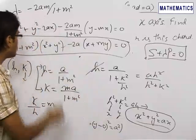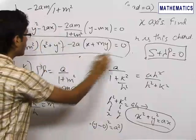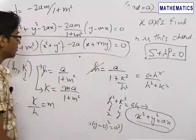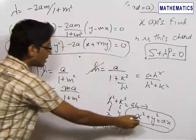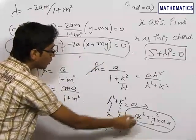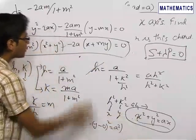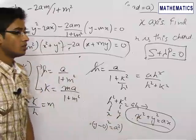Hence, the final answers are: the equation of the circle is (1 plus m squared)(x squared plus y squared) minus 2a(x plus my) equals 0, and the locus of the center of this circle is x squared plus y squared equals ax.